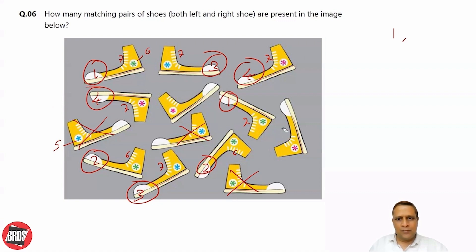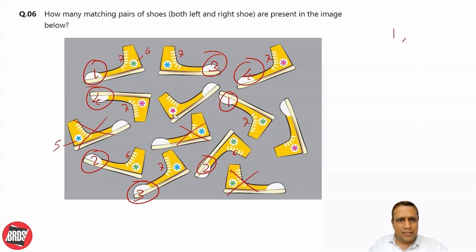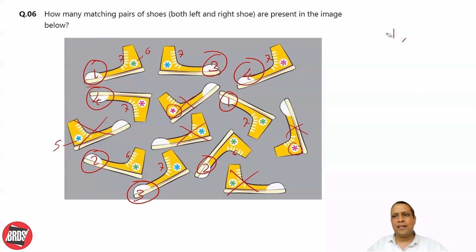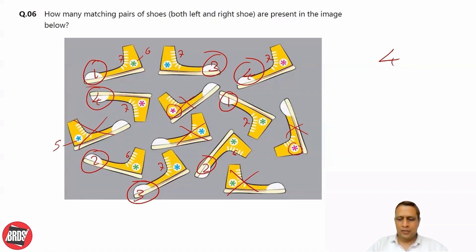Now only these two are left. Let me count this one: one, two, three, four, five lines and here: one, two, three, four, five. But this one has five and here it is six, so this will not make a pair. So in total we are having four pairs - four is the answer.